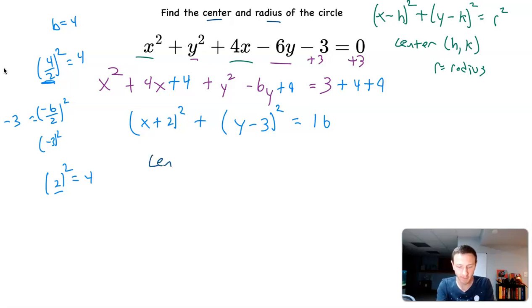So the center is going to be, think about this, the x value is x plus 2. Look at my equation of a circle, x minus h squared. So it's minus. So if that's plus 2, that's got to be negative 2. Because if I do x minus a negative 2, I get x plus 2. And that's what we ended up getting there, x plus 2.